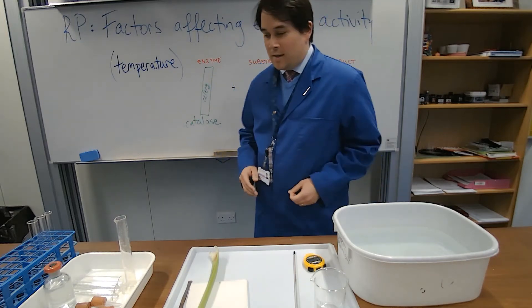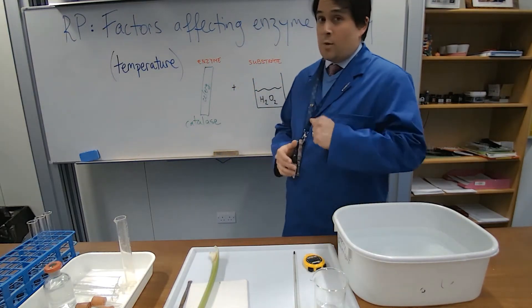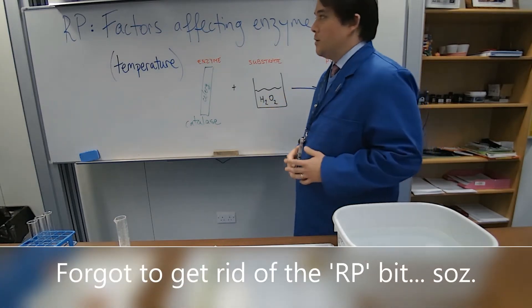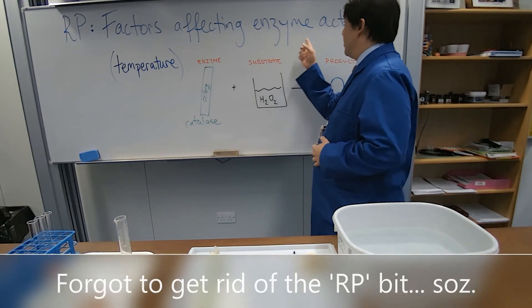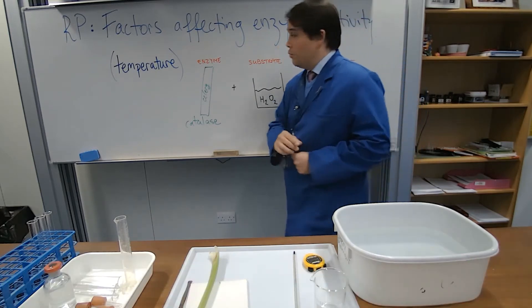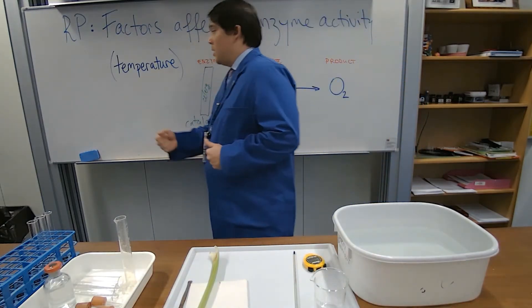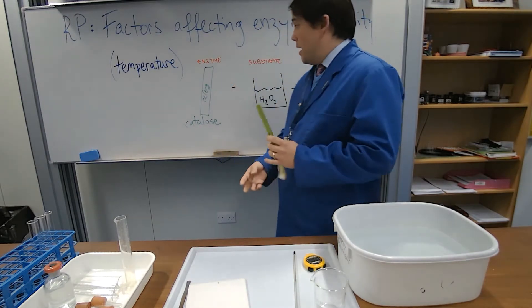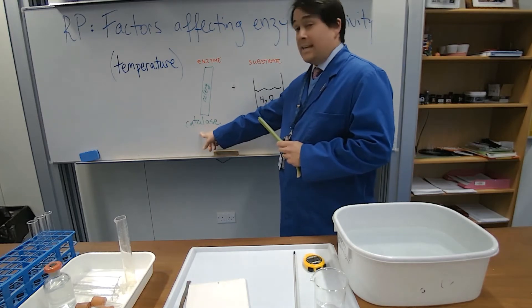Hello, today we're doing another practical, not a required one for our AQA this time, but just an interesting investigation. We're going to look at factors affecting enzyme activity again, but this time we'll be looking at temperature. And to help us out, we're going to be using enzymes found in celery, and the enzyme is called catalase.